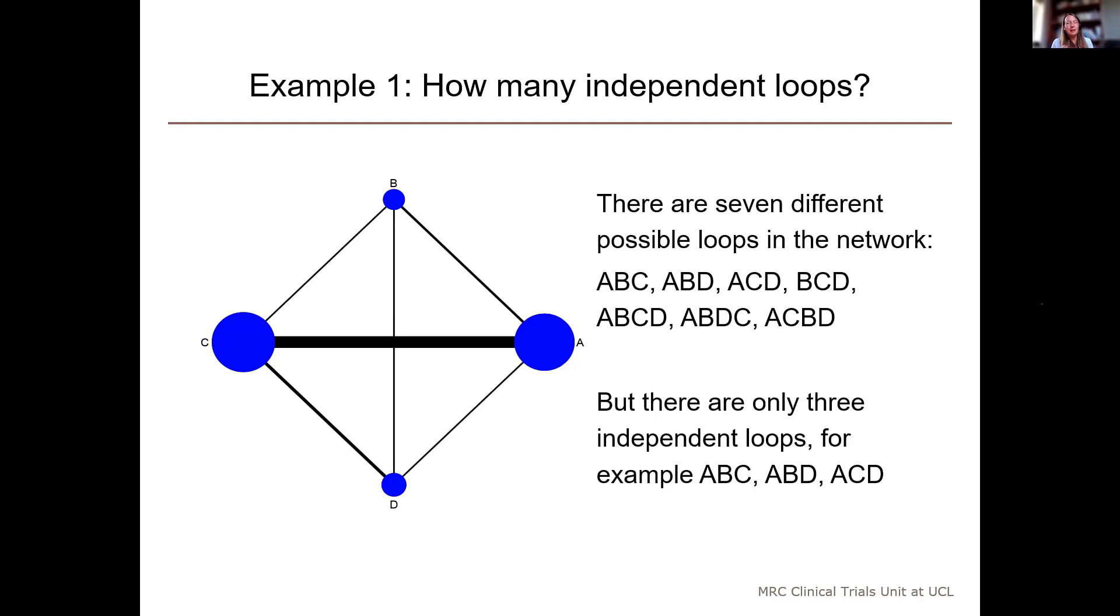The way of identifying the loops is that when we take away an edge, we break a loop, and if we write down which loop we've just broken, that's how we find the names of the loops. But it's not very straightforward, even with an example as small as this with only four treatments.